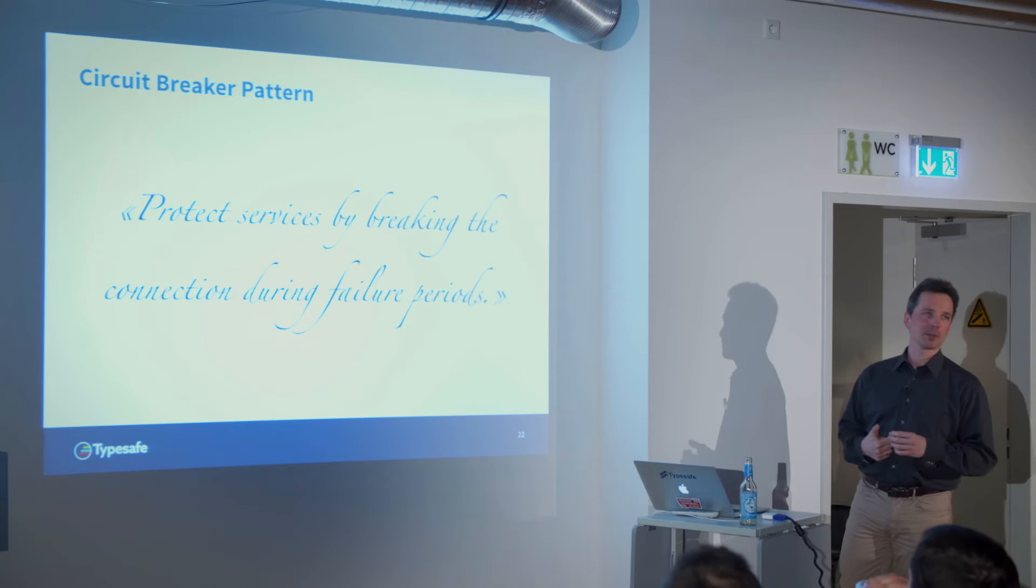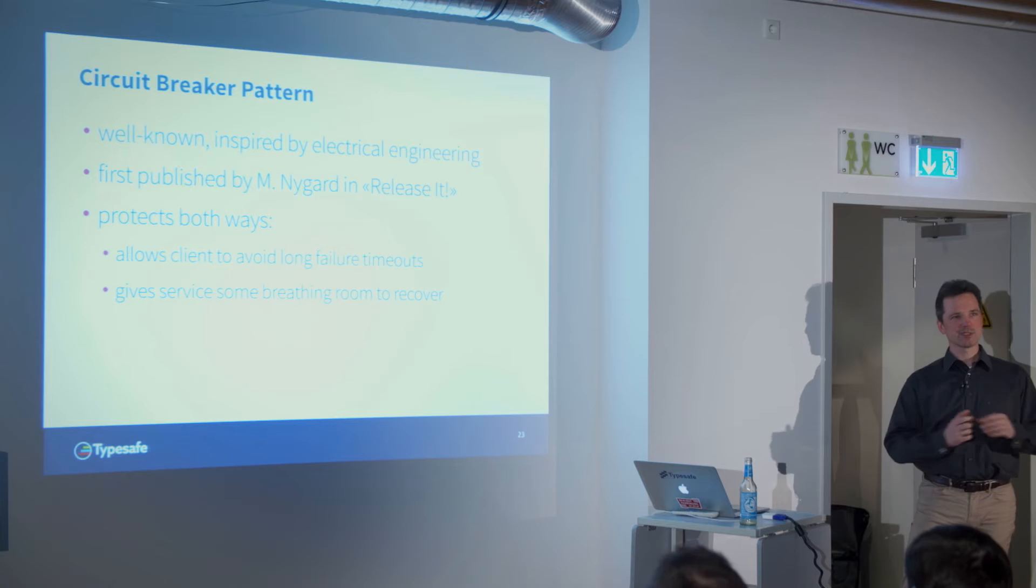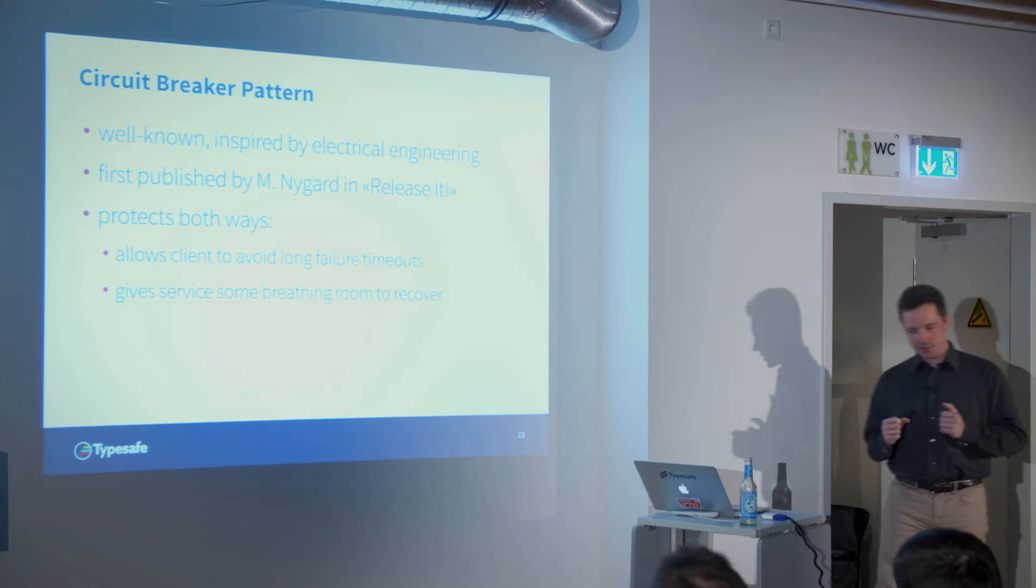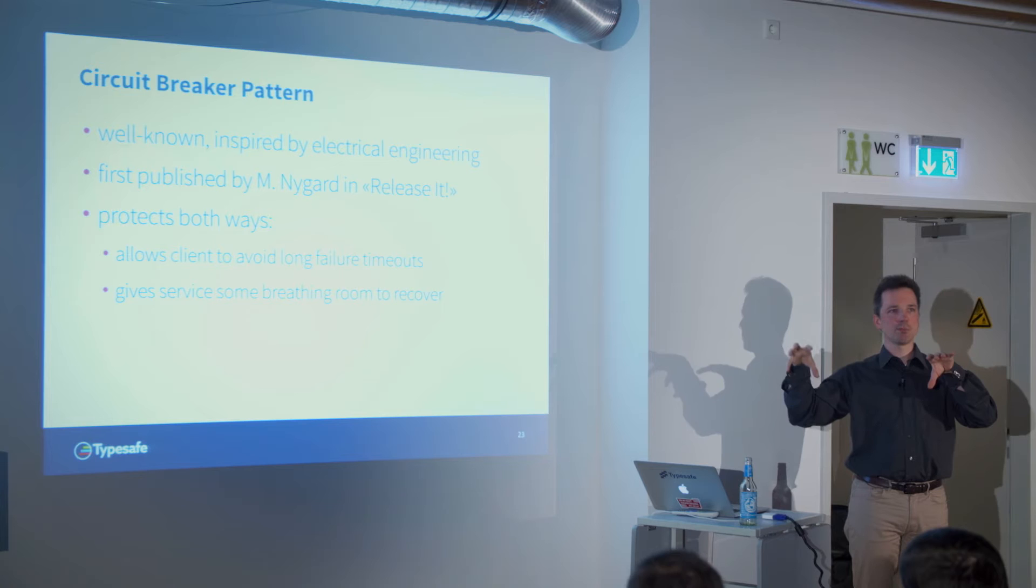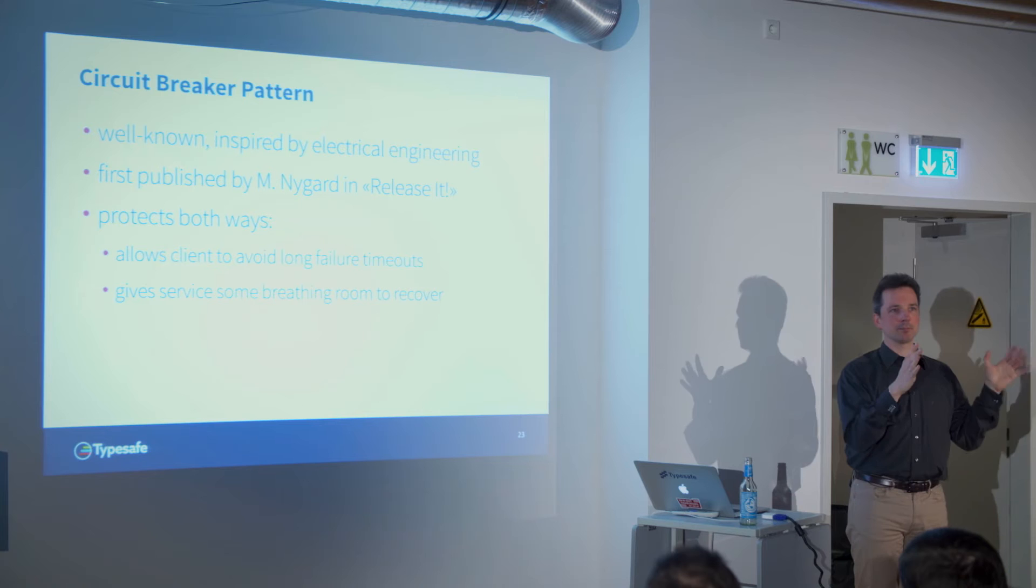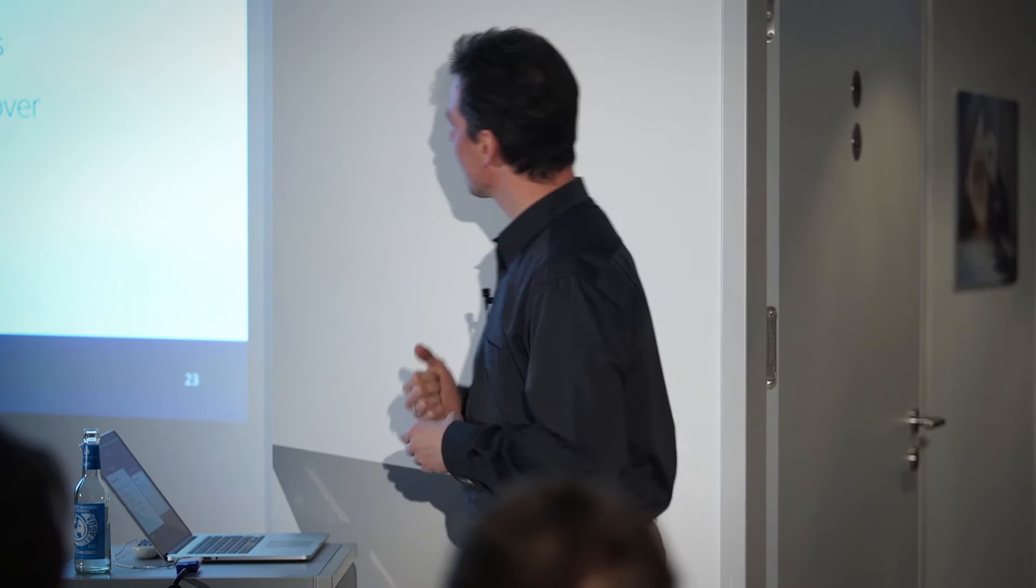Protect services by breaking the connection during failure periods is my attempt at doing a one line summary. This pattern is basically inspired by, but you shouldn't take it too literally, by electrical engineering. The point is, you have one electrical circuit here, and another here, and then you have a power source. And, you put a breaker in between because if this circuit is misbehaving and drawing too much current, then you rather shut it down so that the rest keeps functioning. Instead of that, it just drains the whole power and nothing works. So, that's the basic inspiration. Of course, we don't measure current in a computer system. That's not how things work. You'll see how it works in a second.